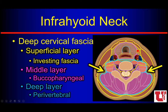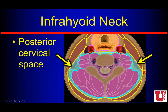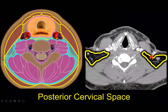Looking at that middle layer more closely, we see the visceral space, which only exists in the infrahyoid neck — that's the thyroid, trachea, parathyroid, and esophagus down low, with the larynx up higher. In between the investing or superficial layer and the deep perivertebral layer, we have fat deep to the SCM that we call the posterior cervical space — all that fat we see down low in between the SCM and the trapezius.